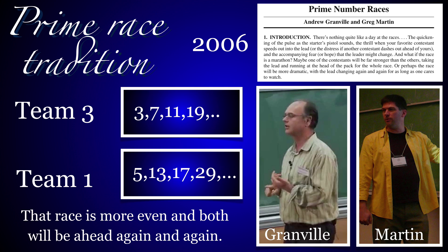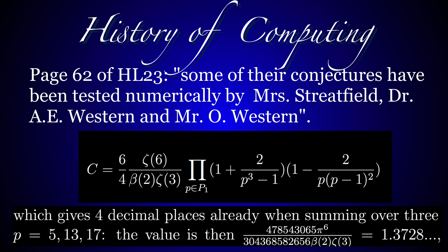This leads to another prime race: which of the two classes grows faster or which is ahead more. Granville and Martin wrote a paper about that about 10 years ago. This story is interesting from the history of computing perspective. Hardy-Littlewood mentioned on page 62 of their paper that some conjectures were tested numerically by Mrs. Stratfield, Dr. A.E. Weston and Mr. O. Weston. These people had paper and pencils computing that constant. They actually got four decimal places already when summing over three primes instead of the product over infinitely many primes. Just taking the first three primes—5, 13, and 17—they got a value which is already quite good.